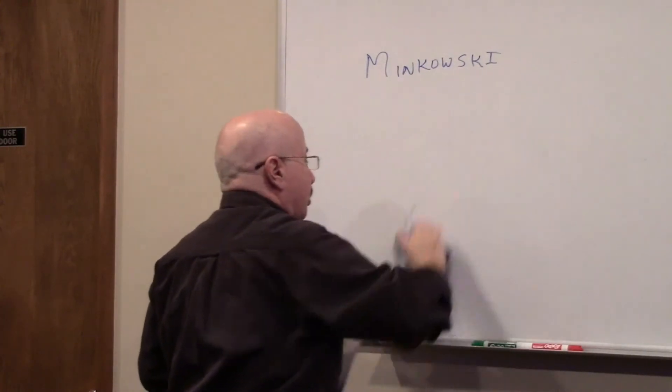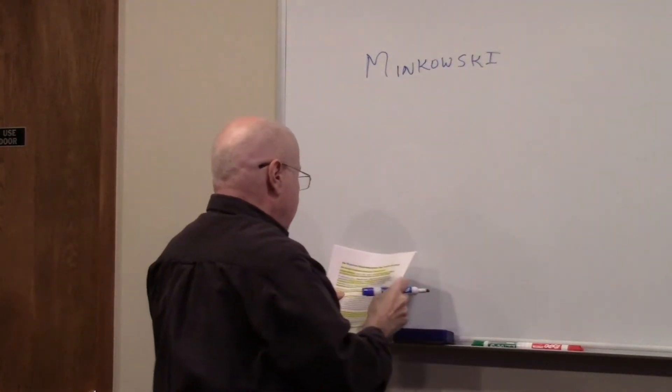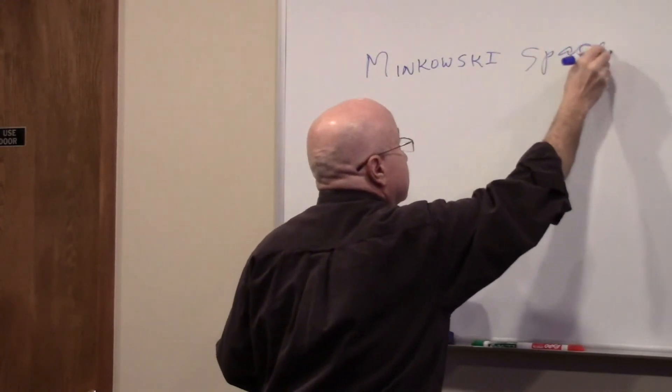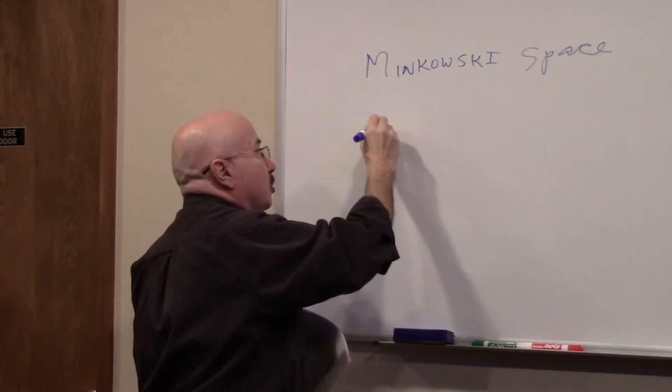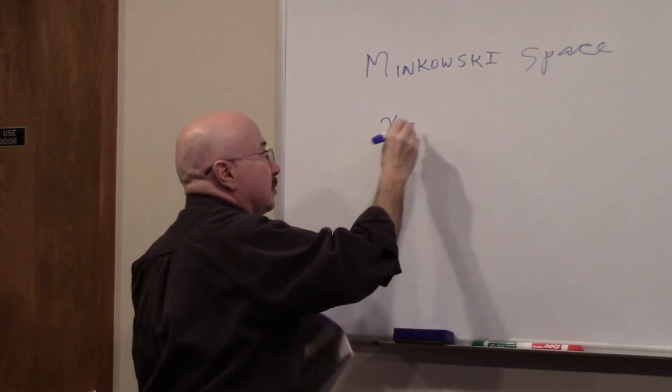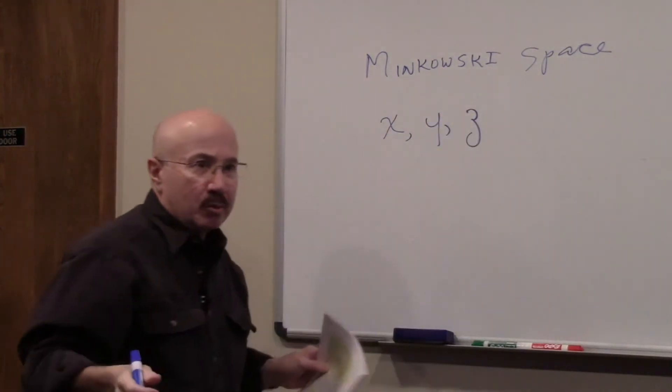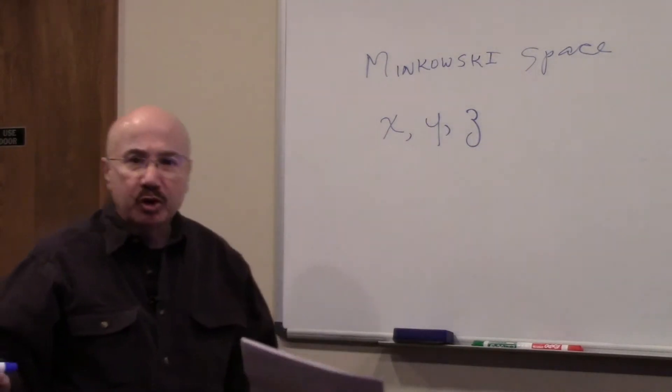So we're going to be talking about Minkowski space. And he has the normal three coordinates, x, y, and z. Those are the normal coordinates.